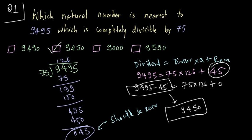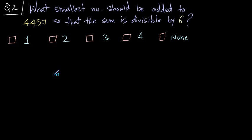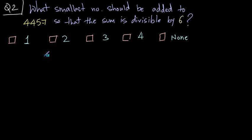Question number two: what smallest number should be added to four thousand four hundred and fifty-seven so that the sum is divisible by six? You have to add some small number to 4457 so that the sum of that number and 4457 is divisible by six. To solve this, let's divide 4457 by six.